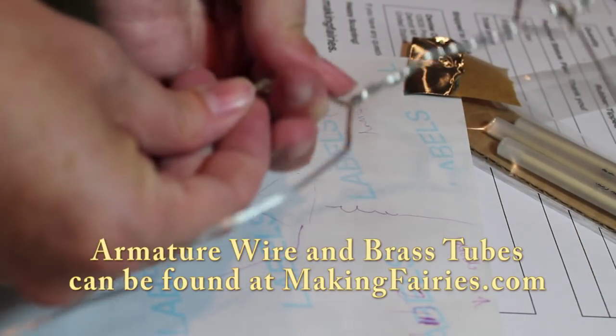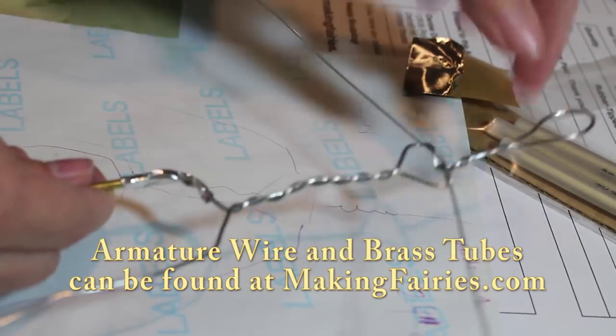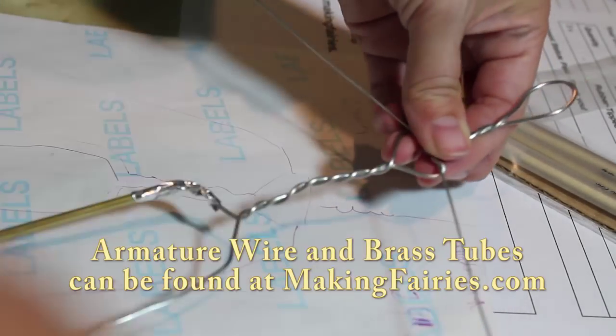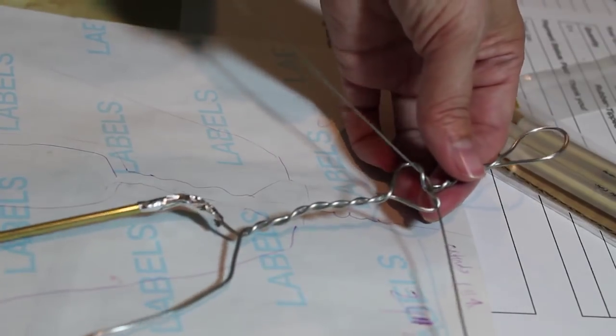It's also a good idea to use either the foil tape up here to secure the arms, or you can use paper tape for that. Okay, so that's how you attach the rod.